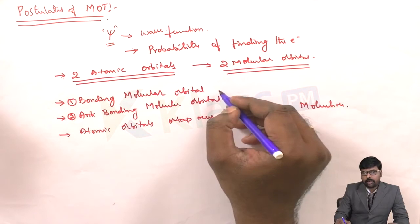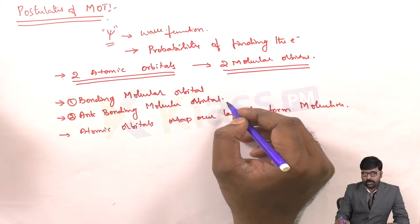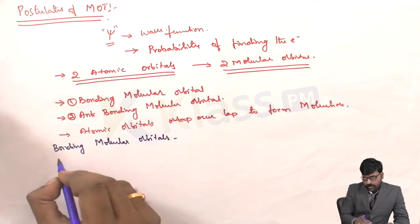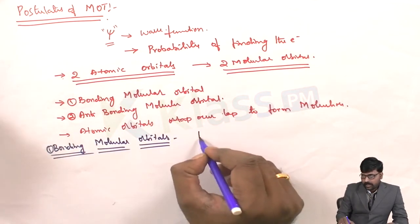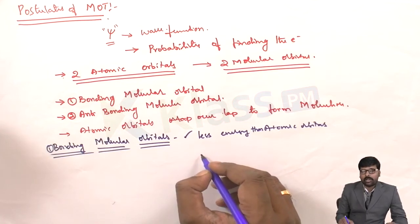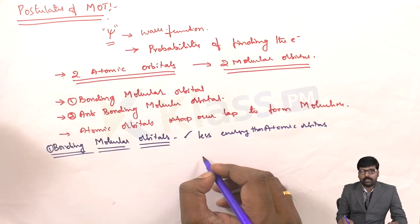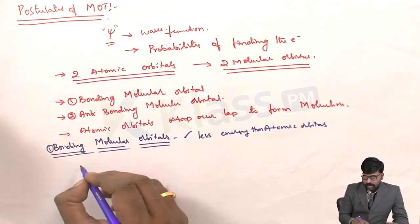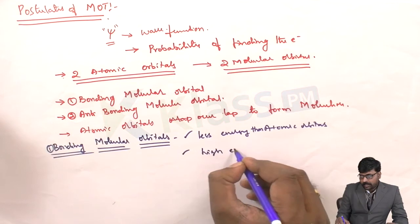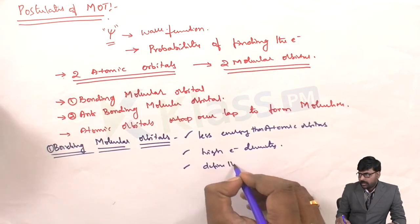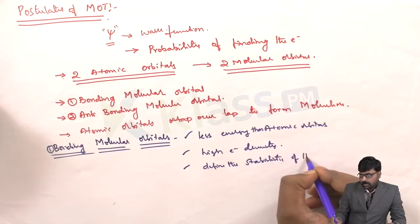Let us see what bonding and anti-bonding molecular orbitals do. Bonding molecular orbitals have less energy than the atomic orbitals, which is why bonding molecular orbitals are filled first before filling the anti-bonding molecular orbitals. Anti-bonding molecular orbitals have higher energy than the corresponding atomic orbitals. Bonding molecular orbitals have high electron density and define the stability of the molecule.